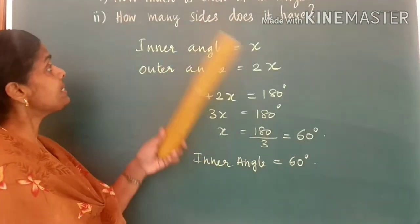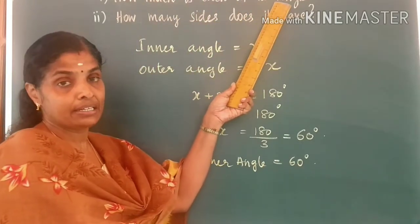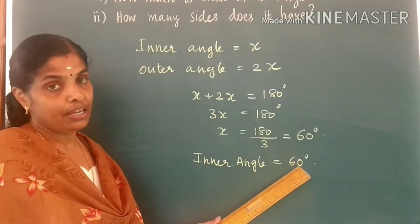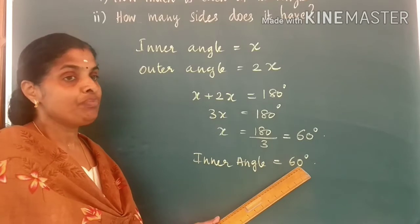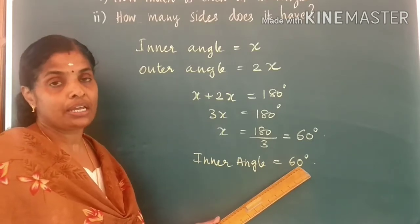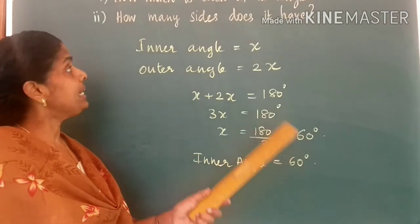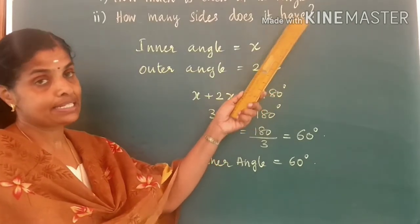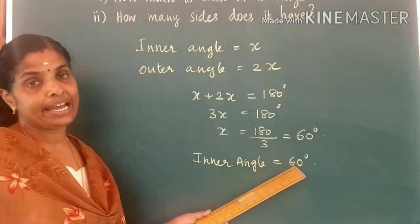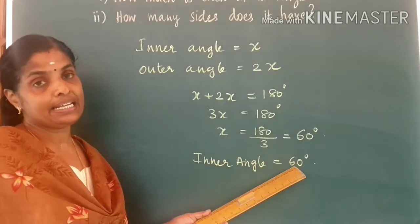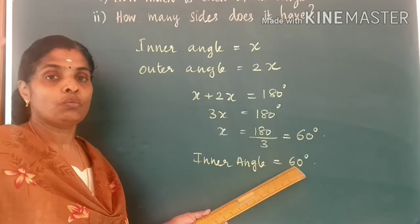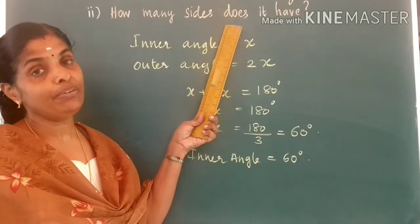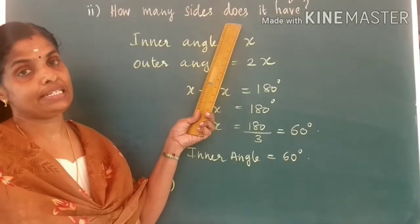Our question is how much is each of its angles? We got each inner angle to be equal to 60 degrees. We can also say about the outer angle — each outer angle would be 60 into 2, which is equal to 120 degrees. Now, how many sides does it have? To get the number of sides, we know each inner angle is 60 degrees. If each inner angle is 60 degrees, then that polygon would be an equilateral triangle. The number of sides is asked — we know in an equilateral triangle, the number of sides is 3.